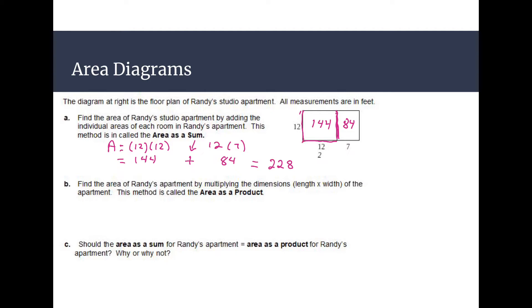And our second method here we're going to call area as a product. Because we're going to find it by multiplying the dimensions, length, and width of the apartment altogether. So once again for area for this one, I know that we have our side of the apartment which is going to be 12. And then we have the base here which is going to be 12 plus 7. So whatever that equals.